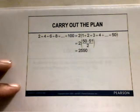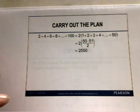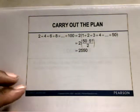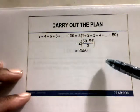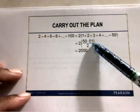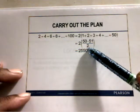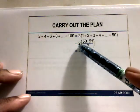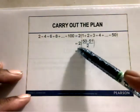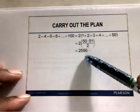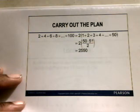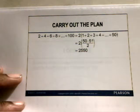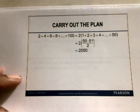Then we carry out the plan. There are 50 sums of 51, so we do 50 times 51 divided by 2. But notice we have the 2 on the outside, so whatever this is will be multiplied by 2. You'll get the final answer: 2,550. So the sum of the first 100 even numbers is 2,550.